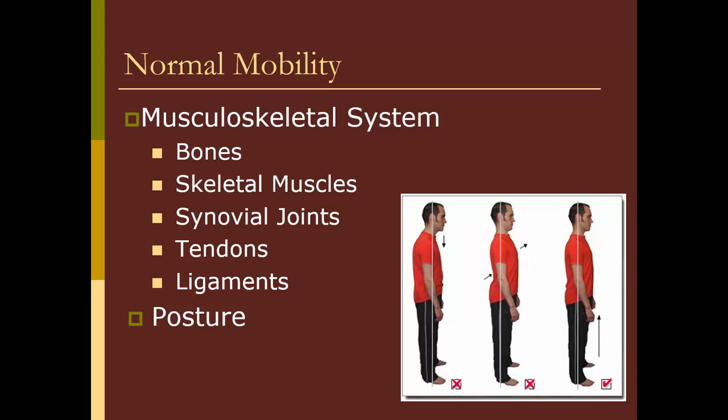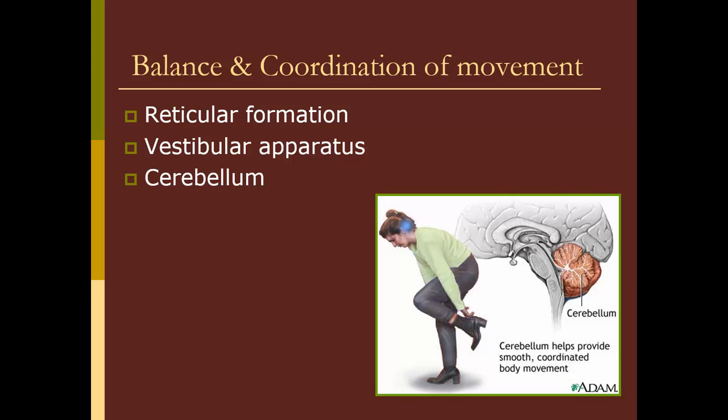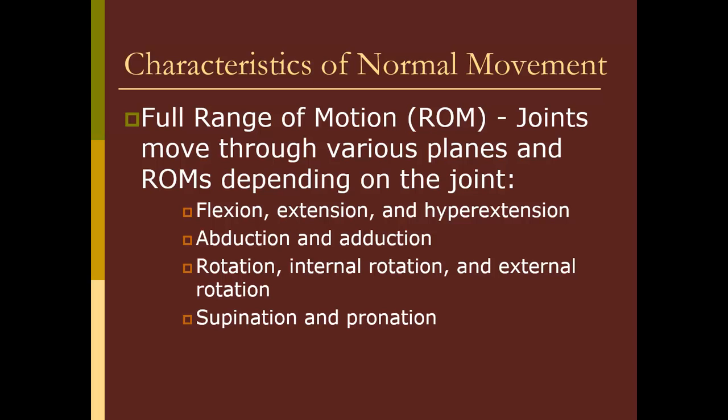Issues with mobility are not limited to conditions that involve the musculoskeletal system. Another major player is our neurologic system. In particular, we have some structures that play important roles in our balance and coordination of movement, and those would primarily be the reticular formation, the vestibular apparatus in the inner ear, and the cerebellum. When we think about the characteristics of normal movement, one of the things we recognize is the importance of range of motion — that normal movement requires full range of motion where joints can move through the various planes they are designed to move through.